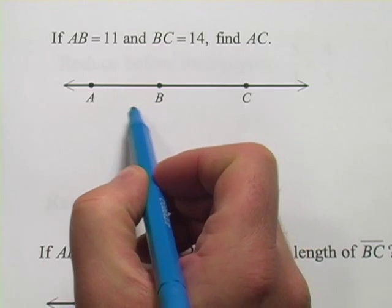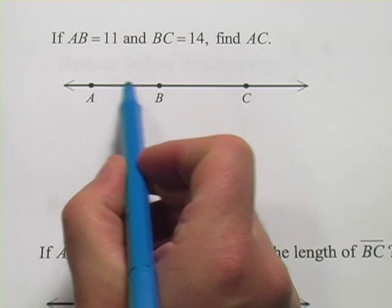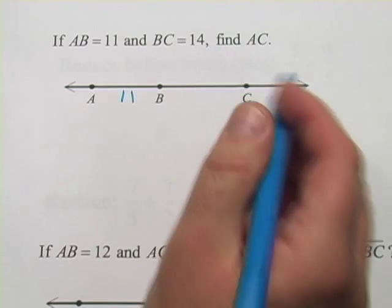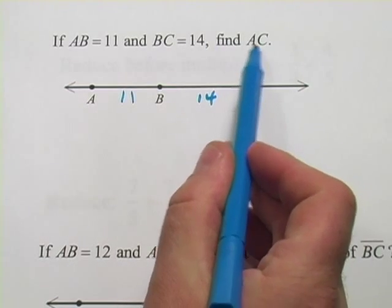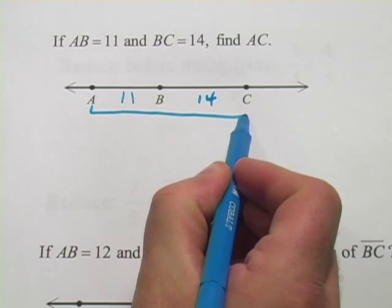So from A to B, that's a segment, and when you see something that says AB equals 11, that means that's the distance between A and B, 11. And here it says BC equals 14. And then it wants us to find AC, so the distance all the way from A over to C.